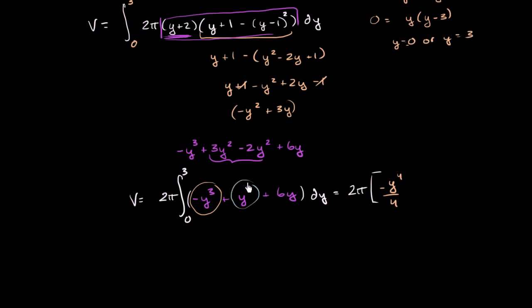Antiderivative of y squared is y to the third over 3. And then finally, antiderivative of 6y is 3y squared. So plus 3y squared.